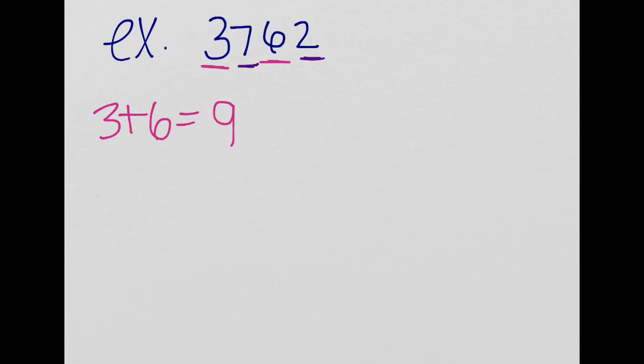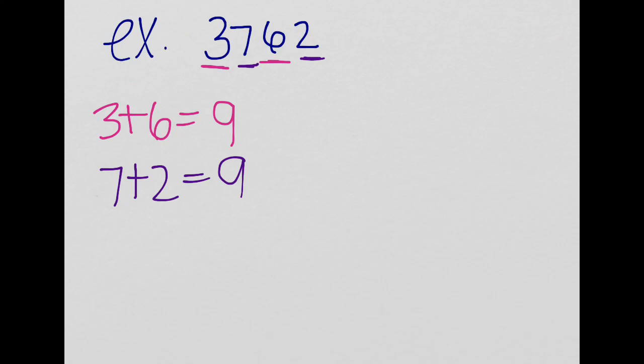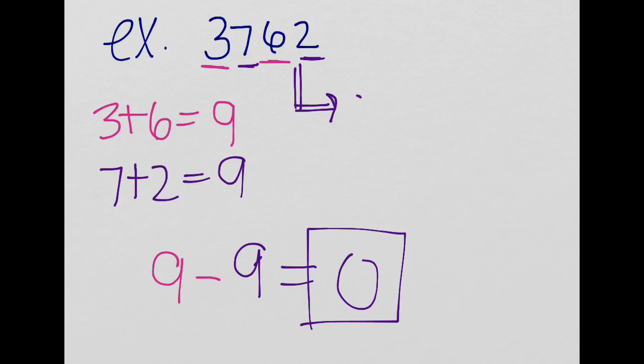And we're going to have 7 plus 2 is equal to 9. And then we're going to subtract them. We have 9 minus 9 which is equal to 0. And as by our rule, because this equals 0 and is therefore divisible by 11, 3,762 is also divisible by 11.